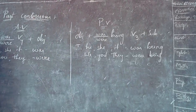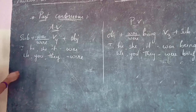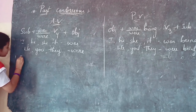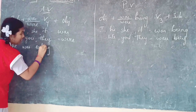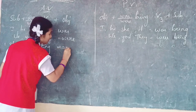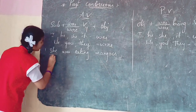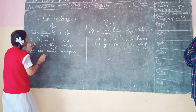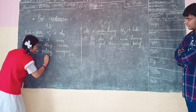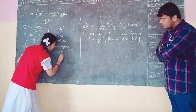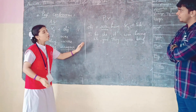Right. Because we use I, he, she, it as singular and we, you, they as plural. Now I will write one sentence: 'She was eating mangoes.' In this sentence, the subject is 'she', 'was eating' is the verb, and 'mangoes' is the object.